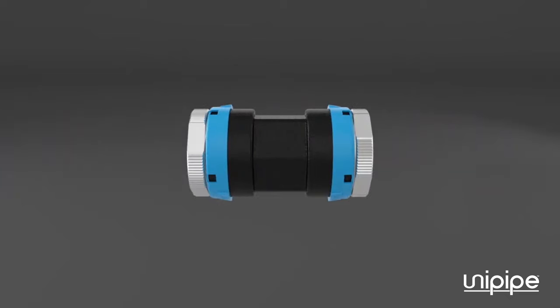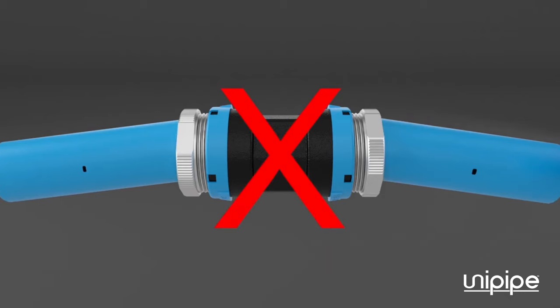When inserting the pipe into the fitting, check the horizontal alignment so the function of the clamp ring in the fitting is not compromised.